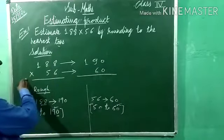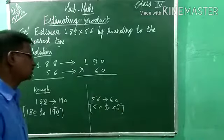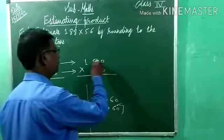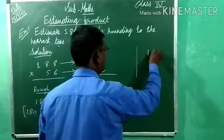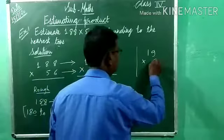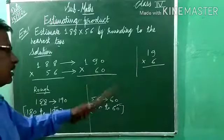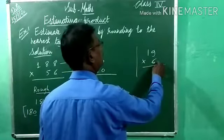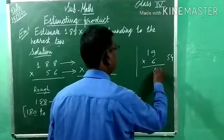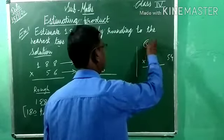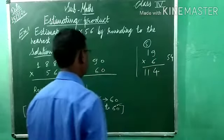Now here the operation given is multiplication. So here also a multiplication sign. Now we just multiply: 190 and 60. Multiply just the numbers — 19 into 6 only. 6 nines are 54, so write 4 carry 5. Now 6 ones are 6, plus 5 equals 11. So we get 114. Now how many zeros? 1, 2. So we put 2 zeros to the right of the number.